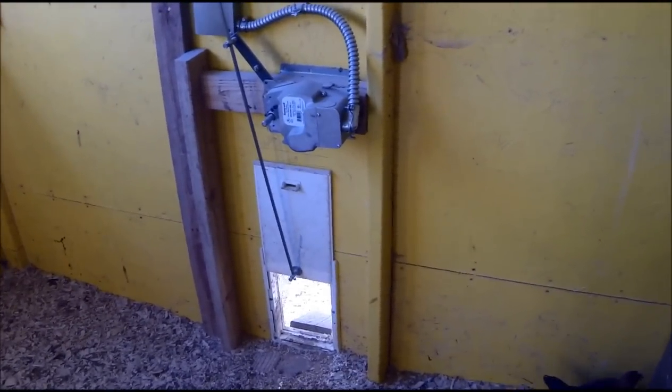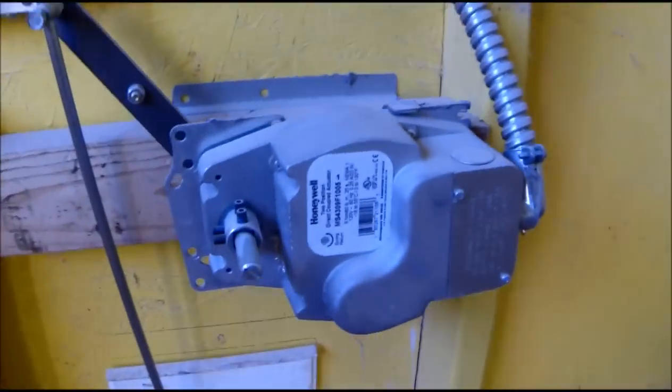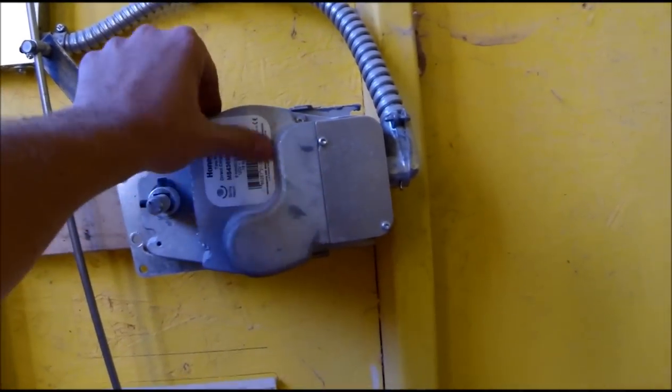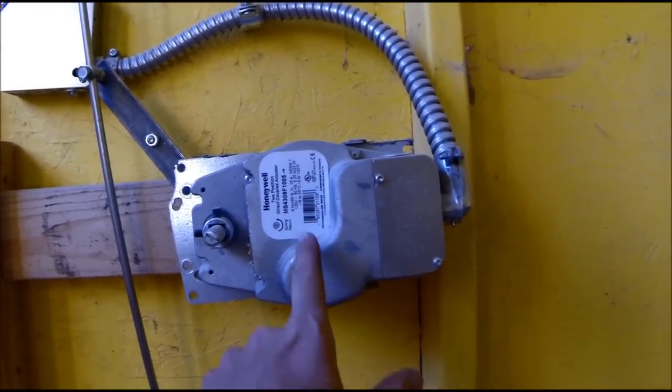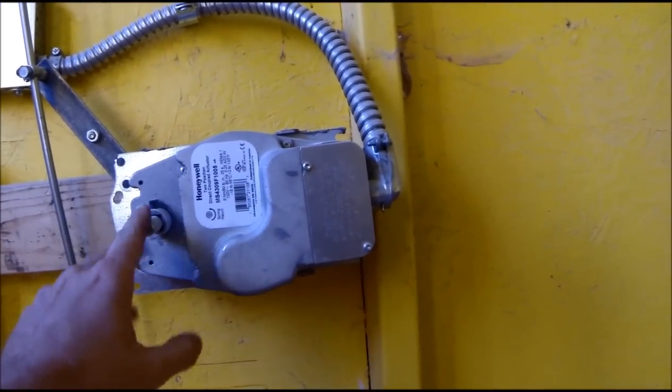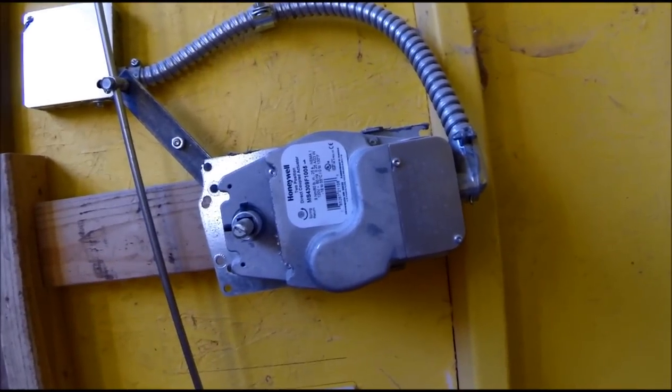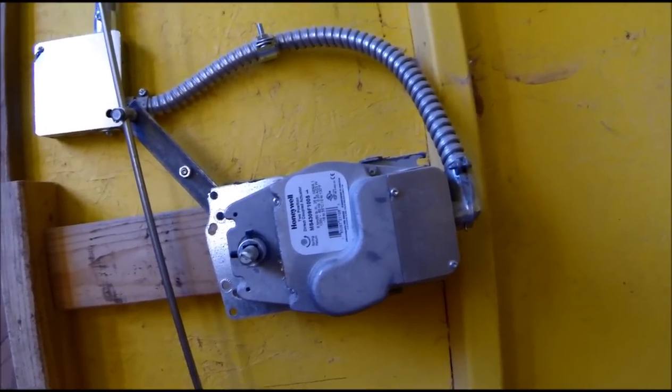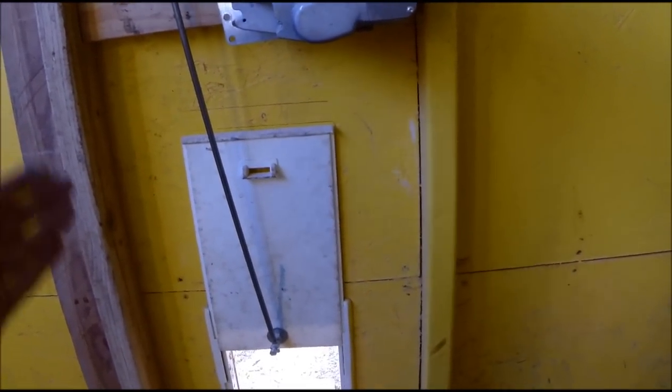All I did is mounted a Honeywell actuator here. This is HVAC stuff, it's a damper actuator. There's the model number. It is just a two position spring return. What that means is there's just a hot and neutral going to it. When you energize it, I've made it so the door comes up and when you de-energize it, a spring takes it down.